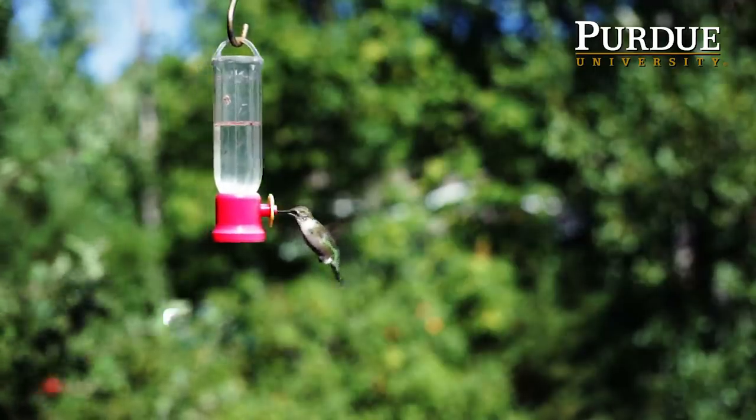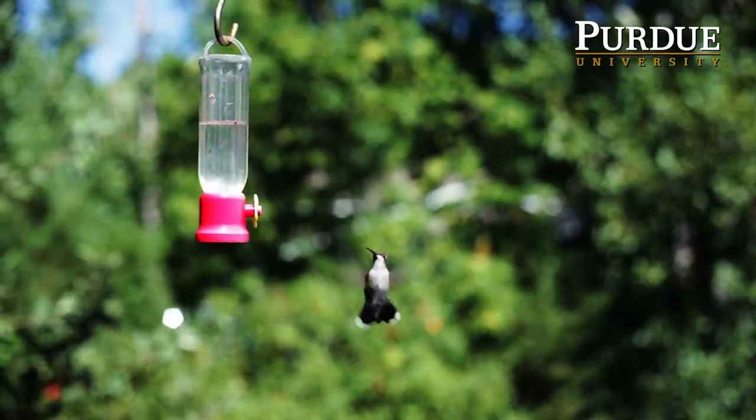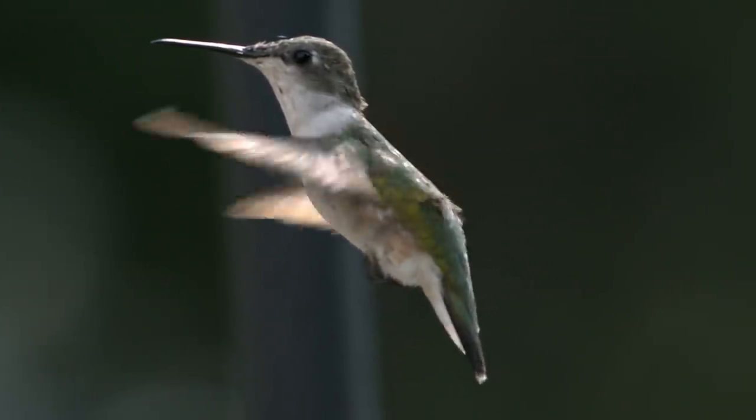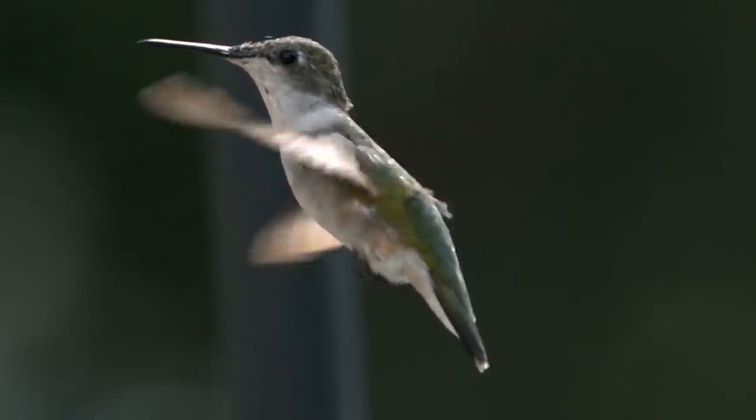Hummingbirds are very unique in the sense that they have the advantages of both birds and insects. Birds can articulate their wings and move them actively because they have muscles on the wing. But hummingbirds can hover, while most birds have to fly forward. So basically they have the advantages of both.